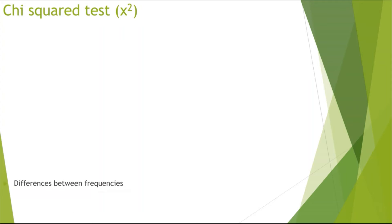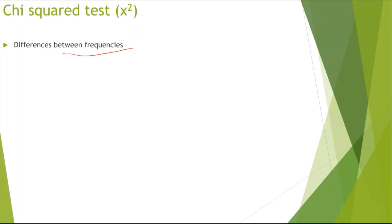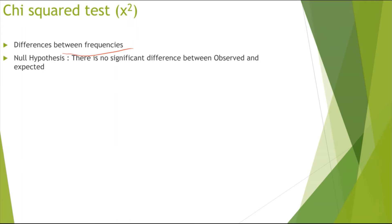Now looking at the final type of statistical test, which is the chi-square test. This basically looks at differences between frequencies, and the null hypothesis for this is always that there is no significant difference between the observed and the expected.